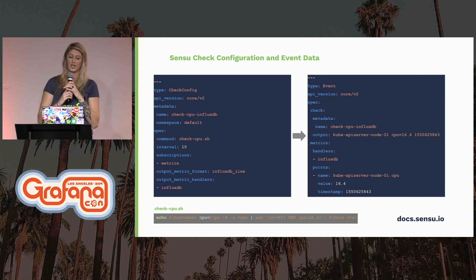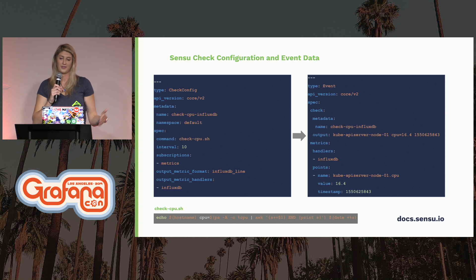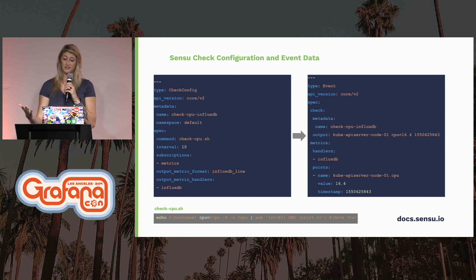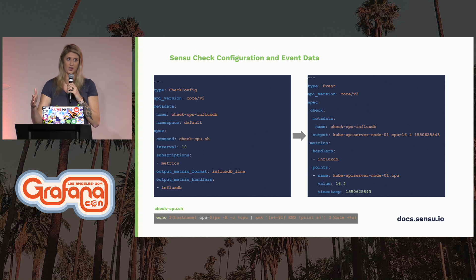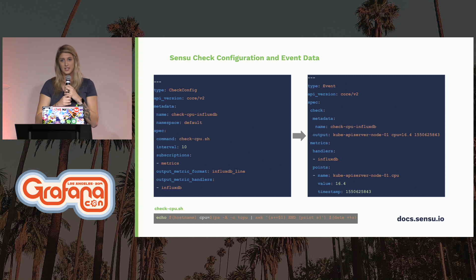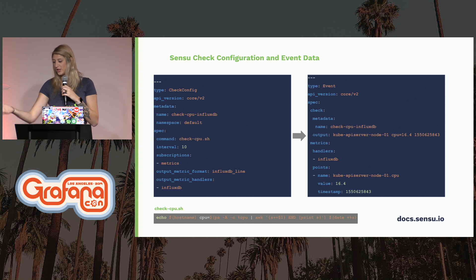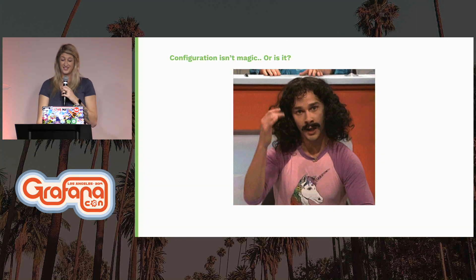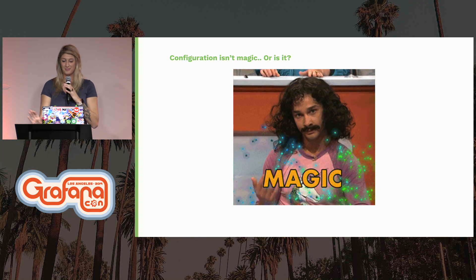On to the Sensu check configuration. Here we're defining a check called check_cpu_influxdb. It will be set to run every ten seconds on any node that you want it subscribed to. The command at the bottom is just a simple shell script that's going to print out CPU usage in InfluxDB line protocol. The last two fields on the left of the screen indicate that check output metric extraction will occur. The event that is produced contains not only execution context — such as status, output, duration — but also entity information about your monitored node and, most importantly, the extracted metric, which you can see as the kube API server CPU value. It's magic and it should just work.